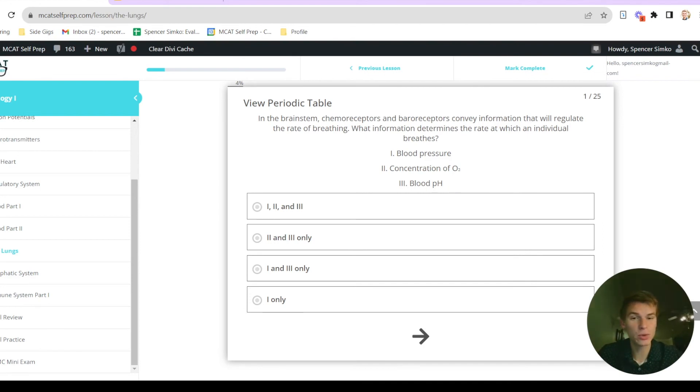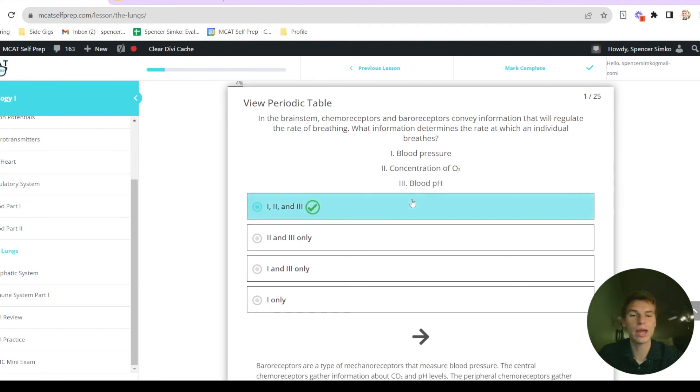And the blood pH is going to affect how much we need to breathe because it's going to be a signal of how much CO2 is in the blood. So the correct answer is answer choice A, one, two, and three.